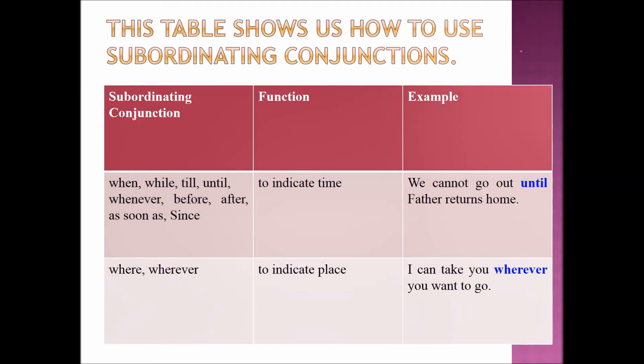This table shows us how to use subordinating conjunctions. Subordinating conjunctions used to indicate time include: when, while, till, until, whenever, before, after, as soon as, since. Example sentence: 'We cannot go out until father returns home.'